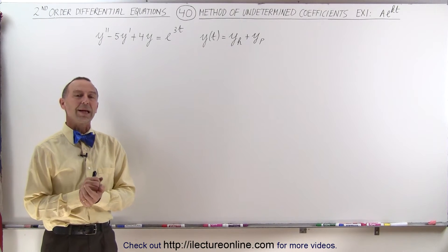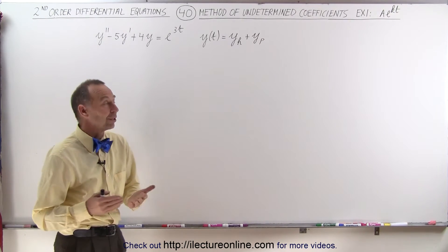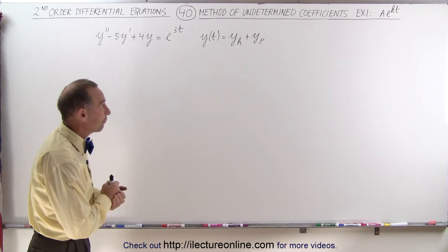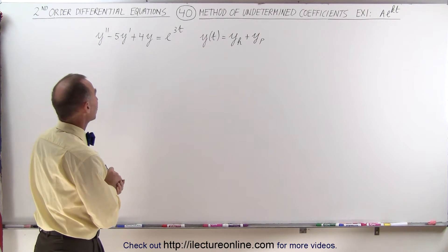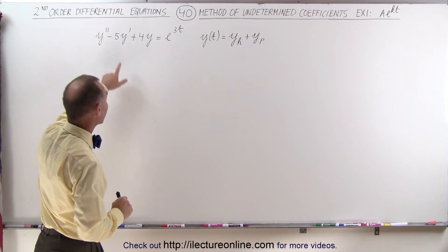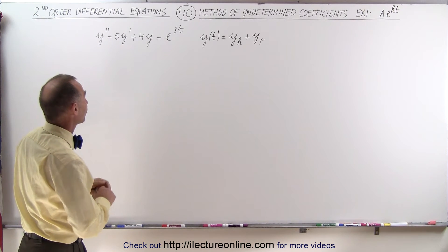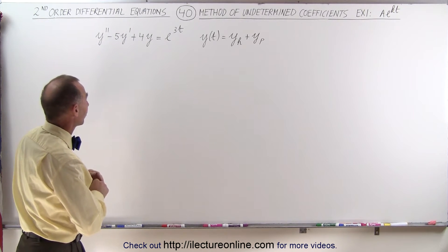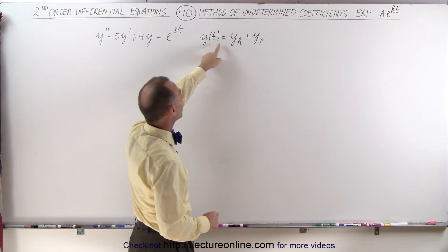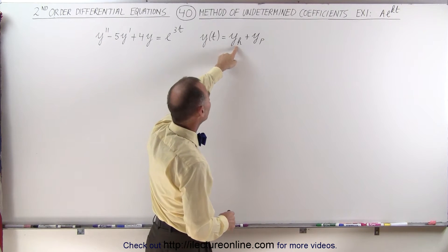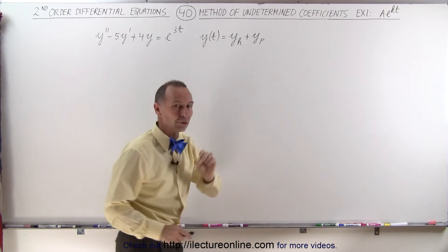Welcome to Electron Line. Here's our first example of how to use the method of undetermined coefficients to solve a non-homogeneous second-order differential equation with constant coefficients. We know that the solution is going to be the sum of the homogeneous part of the solution plus the particular solution.